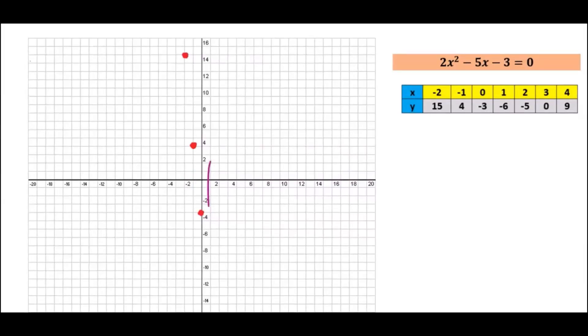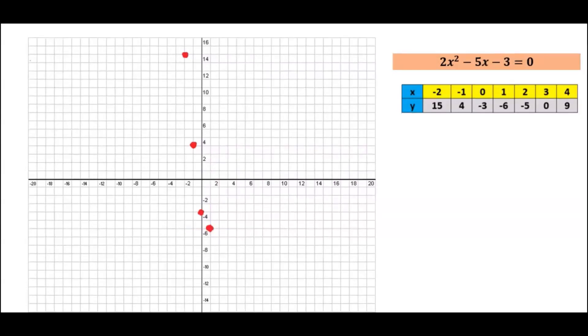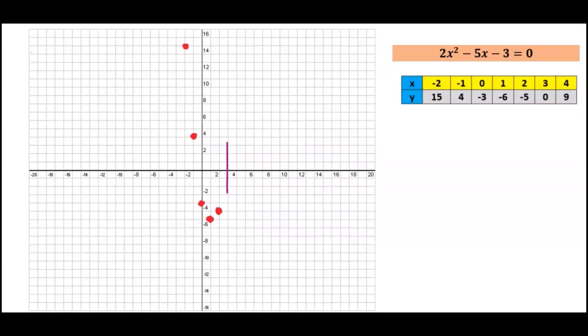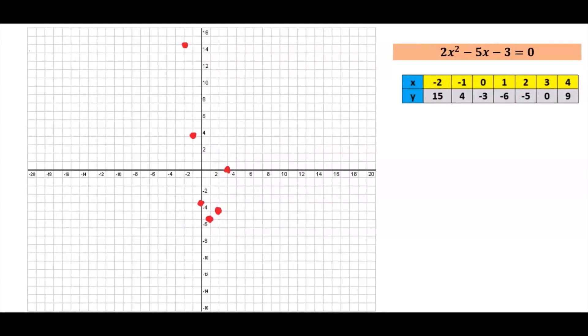When x is 1, y is minus 6. At x equals 2, y is minus 5. At x equals 3, y is 0. At x equals 4, y is 9, and this is the meeting point.